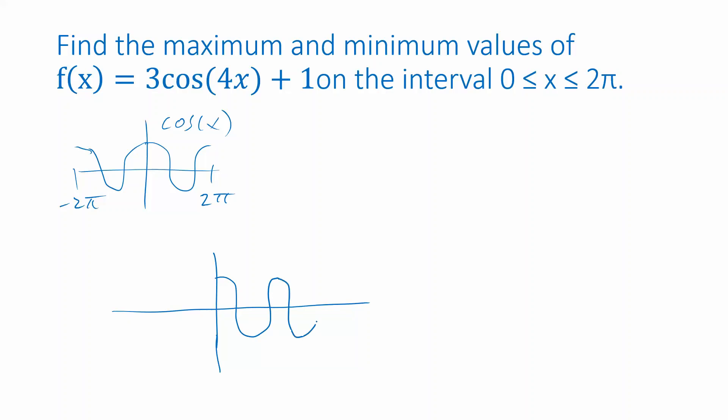One, two, three, four. So this is at 2π right here. Okay, and this is, so far, this is the graph of cosine of 4x.